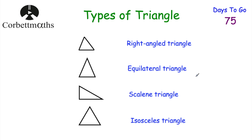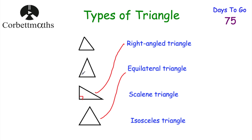Here's a question — pause the video now and match up these triangles to their names. The right-angled triangle is the one with a right angle marked. The equilateral triangle is at the bottom — all three sides the same length and all three angles 60 degrees. The isosceles triangle has two angles and two side lengths the same. And the top triangle, with three different side lengths and three different angles, is the scalene triangle.